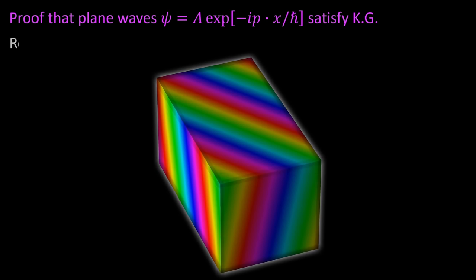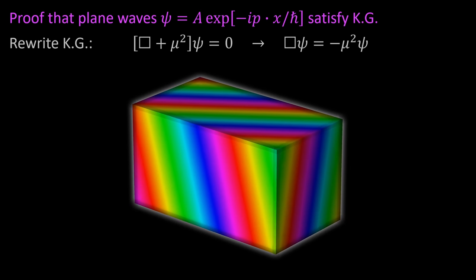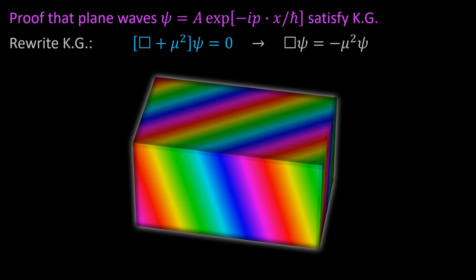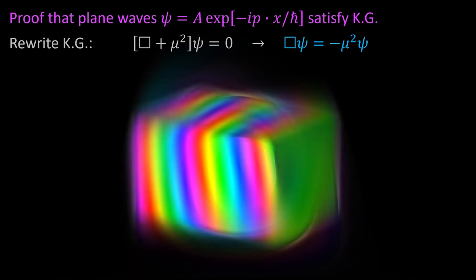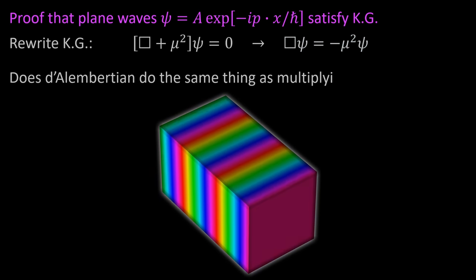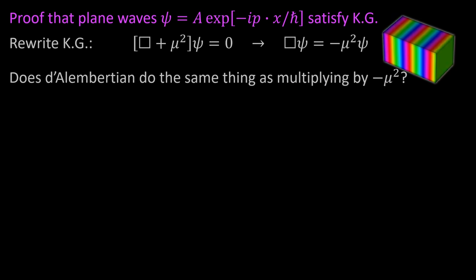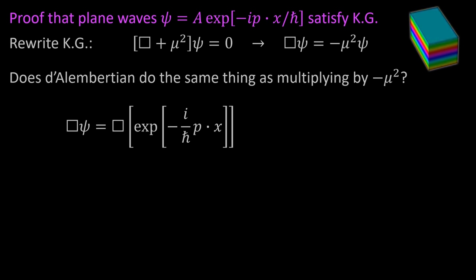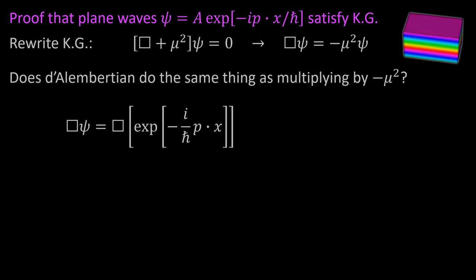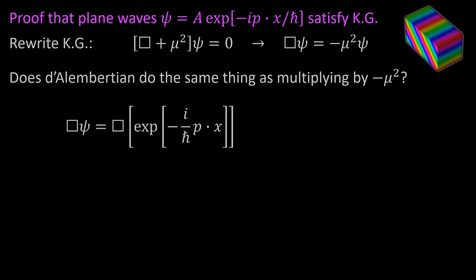Let's verify that these plane waves actually solve the Klein-Gordon equation. We rewrite the equation as □ψ = −μ²ψ and ask: when we apply the d'Alembertian to our plane wave, does that have the same effect as multiplying by −μ²? We write □ψ as the d'Alembertian acting on the exponential with −i/ħ times the four-momentum dot the four-position. The arbitrary factor A can be set to one without loss of generality since it divides out of the equation.